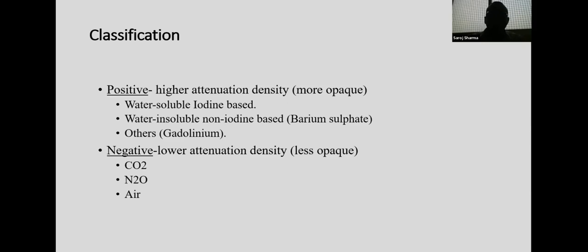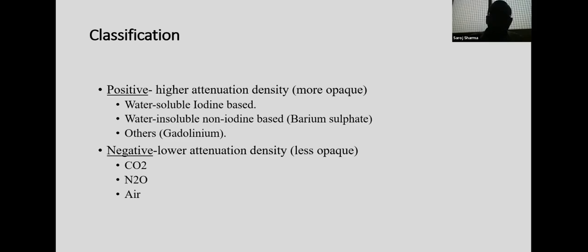Positive contrast media — if after giving contrast the organ or structure appears more opaque, more white than surrounding structures, that is positive contrast media. If the area appears black compared to surrounding structures, it is negative contrast media. Examples of positive contrast media are iodine-based media, barium sulfate, and gadolinium. Negative contrast media include carbon dioxide, oxygen, air, and water.